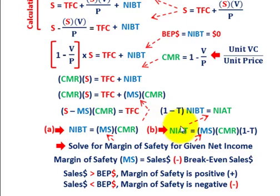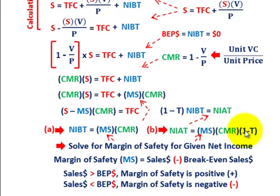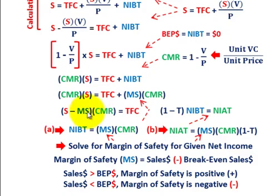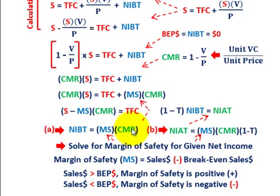If we look at it in terms of net income after taxes, that's just: (1 − T) times net income before taxes. So we can solve for net income after taxes as: margin of safety times contribution margin ratio times (1 − T). You can also rearrange to find margin of safety if you know net income before taxes and the contribution margin ratio.